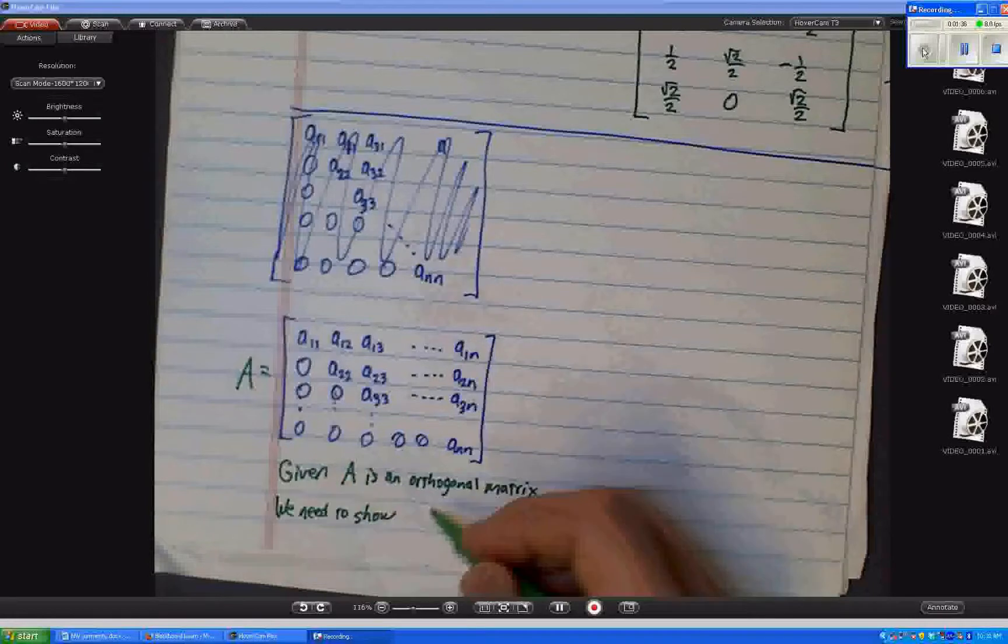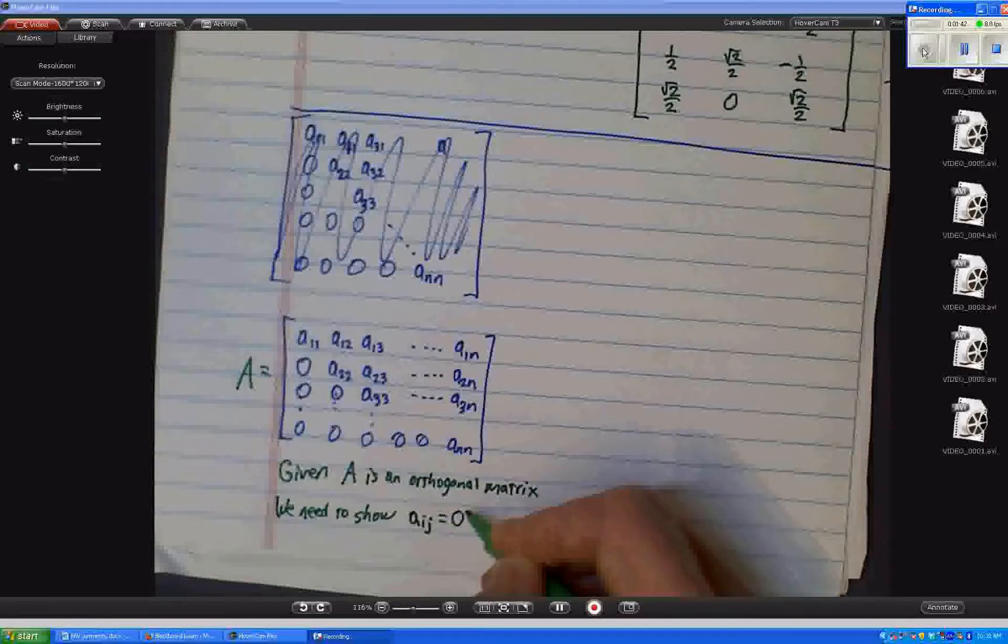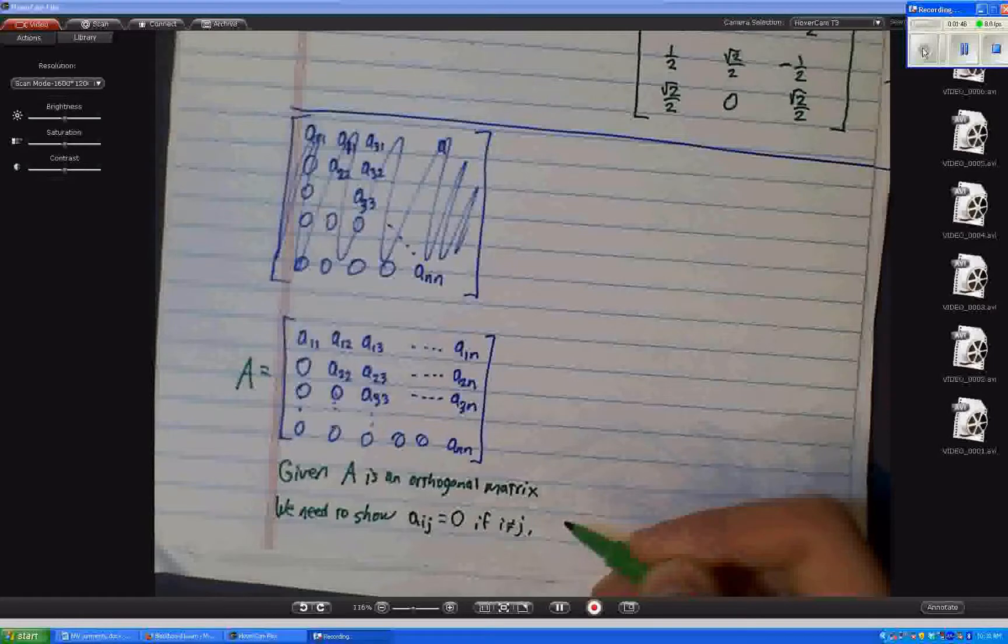So one way to say that is Aij equals 0 if i does not equal j. That's maybe a quick way to say it.